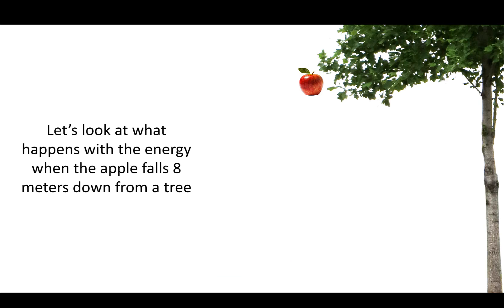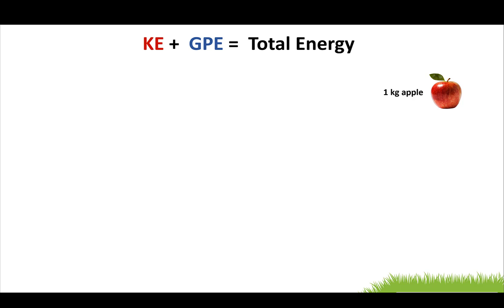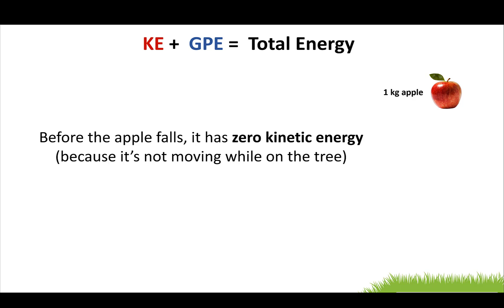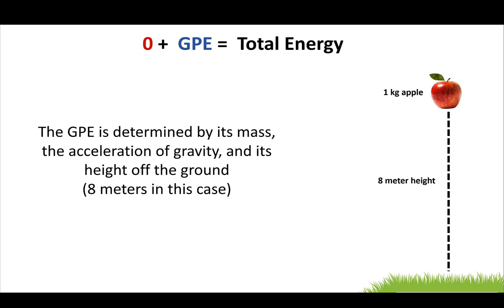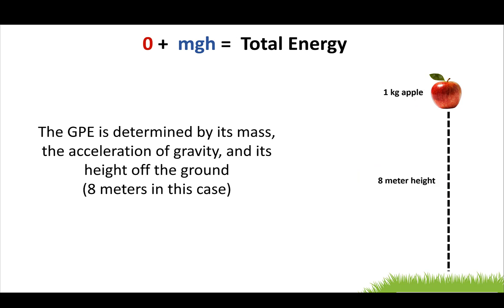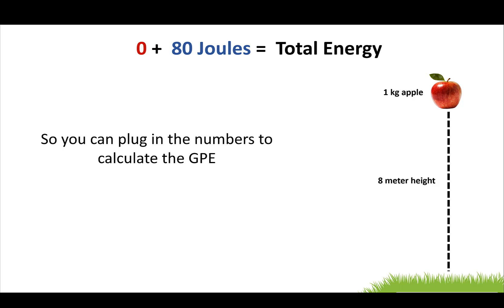Let's look specifically at what happens to the energy when an apple falls eight meters down from a tree. We know that kinetic plus gravitational energy equals total energy, ignoring other energy types. Before the apple falls, it has zero kinetic energy because it's not moving. So we can find the total energy from the gravitational energy: GPE equals mass times acceleration of gravity times height — one kilogram times 10 times 8 meters — giving a total energy of 80 joules.